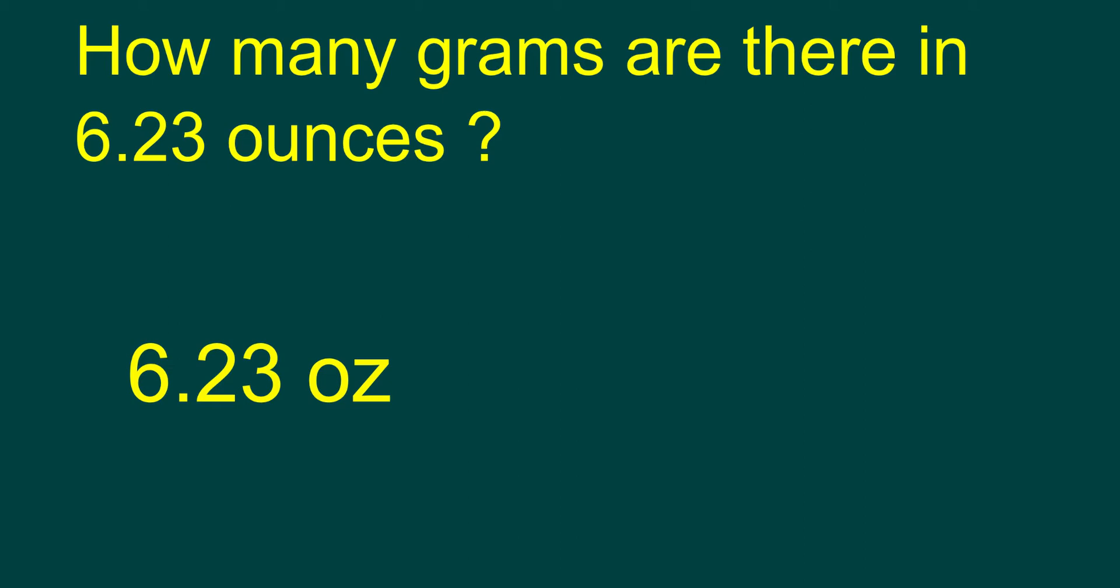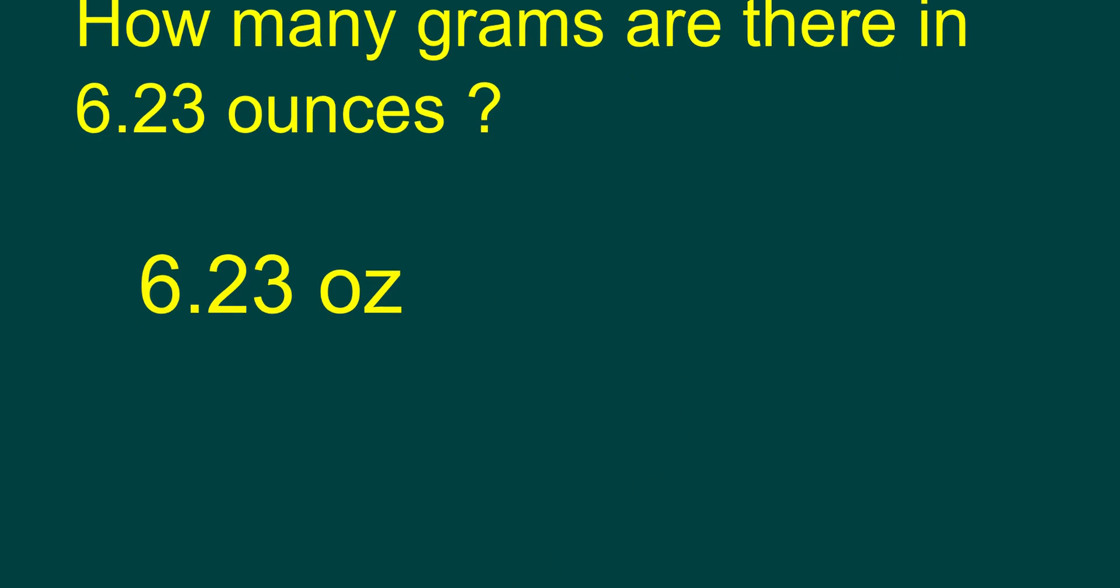For the first example, how many grams are there in 6.23 ounces? So, there's our 6.23. We're going to use the multiplying factor of 28.3495 grams per ounce.